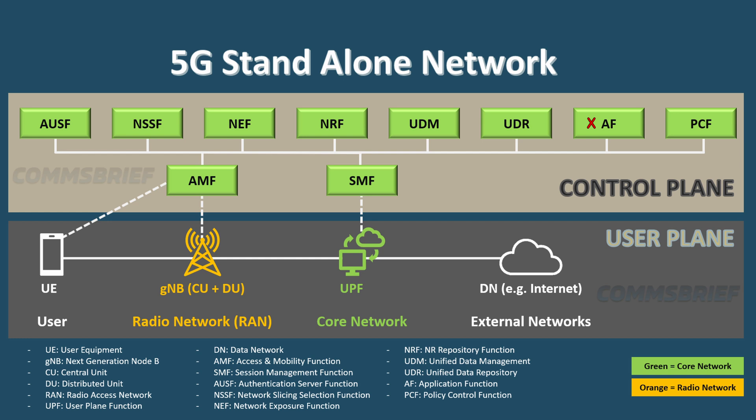Finally, the last node we're going to talk about is AF. AF stands for Application Function and it works with other network functions to deal with various service types such as voice calls, SMS, and video streaming. The applications that use these services have specific needs in terms of Quality of Service, QoS, policy, charging, etc. So in the mobile network, application functions exist for these different service types.